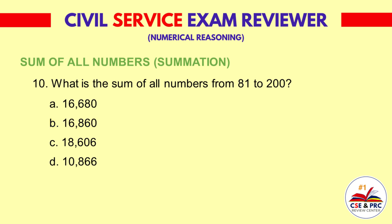Question 10: What is the sum of all numbers from 81 to 200? a. 16,680  b. 16,860  c. 18,606  d. 10,866